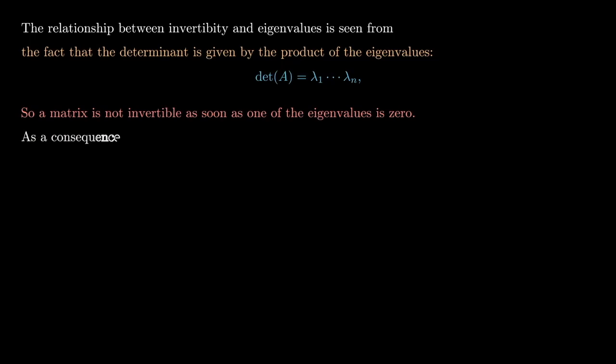So as a consequence, all we need to do is find a diagonal matrix with at least one of the diagonal entries being 0. The simplest example, perhaps one of the simplest examples, is given by the matrix 1, 0, 0, 0.